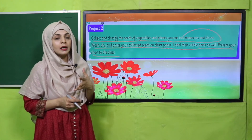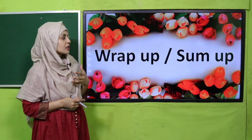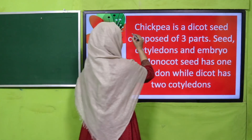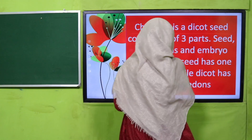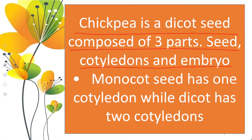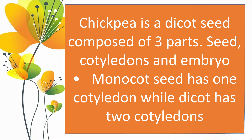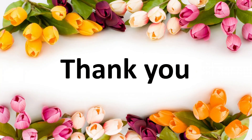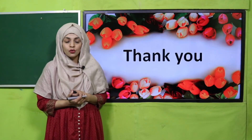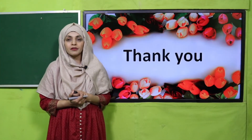Wrap up: Today we learned that chickpea is a dicot seed composed of three parts — seed coat, cotyledons, and embryo. Monocot seed has one cotyledon while dicot has two cotyledons. I hope you have enjoyed today's lecture. Keep everybody around you safe, have a good day, thank you so much, Allah Hafiz.